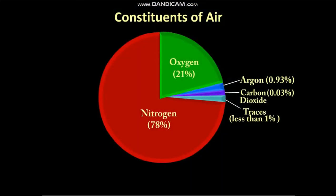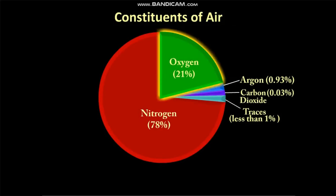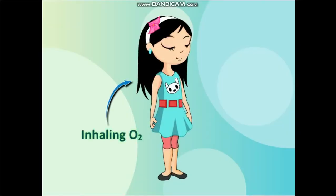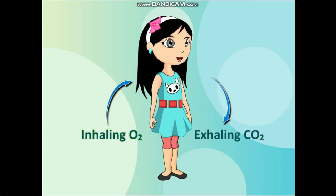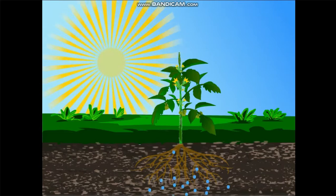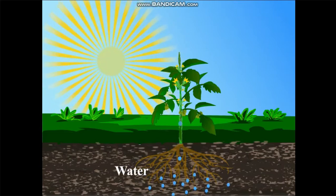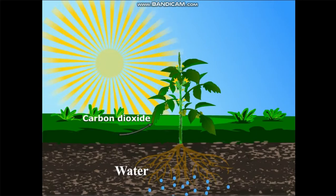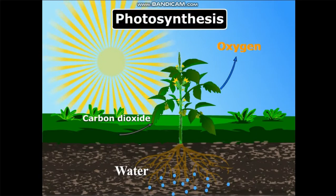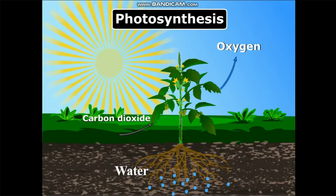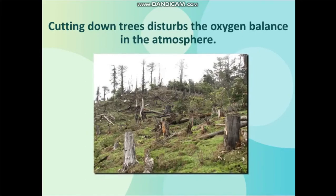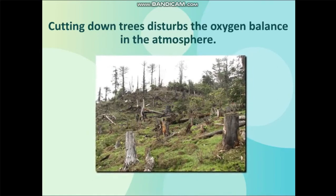Oxygen makes up 21% of the volume of air. All living beings inhale oxygen for their survival. Green plants produce oxygen during photosynthesis. Cutting down trees disturbs the oxygen balance in the atmosphere.